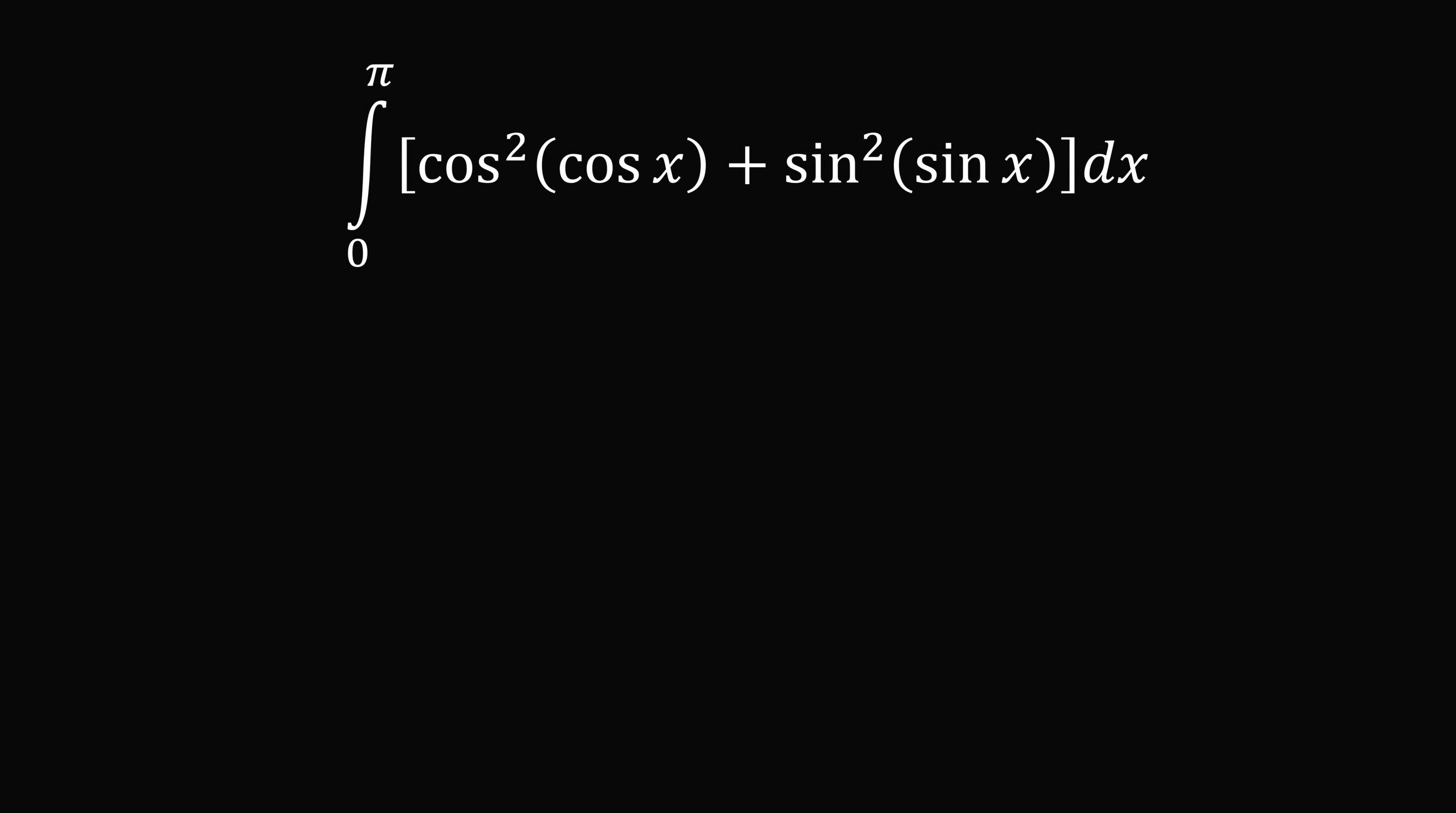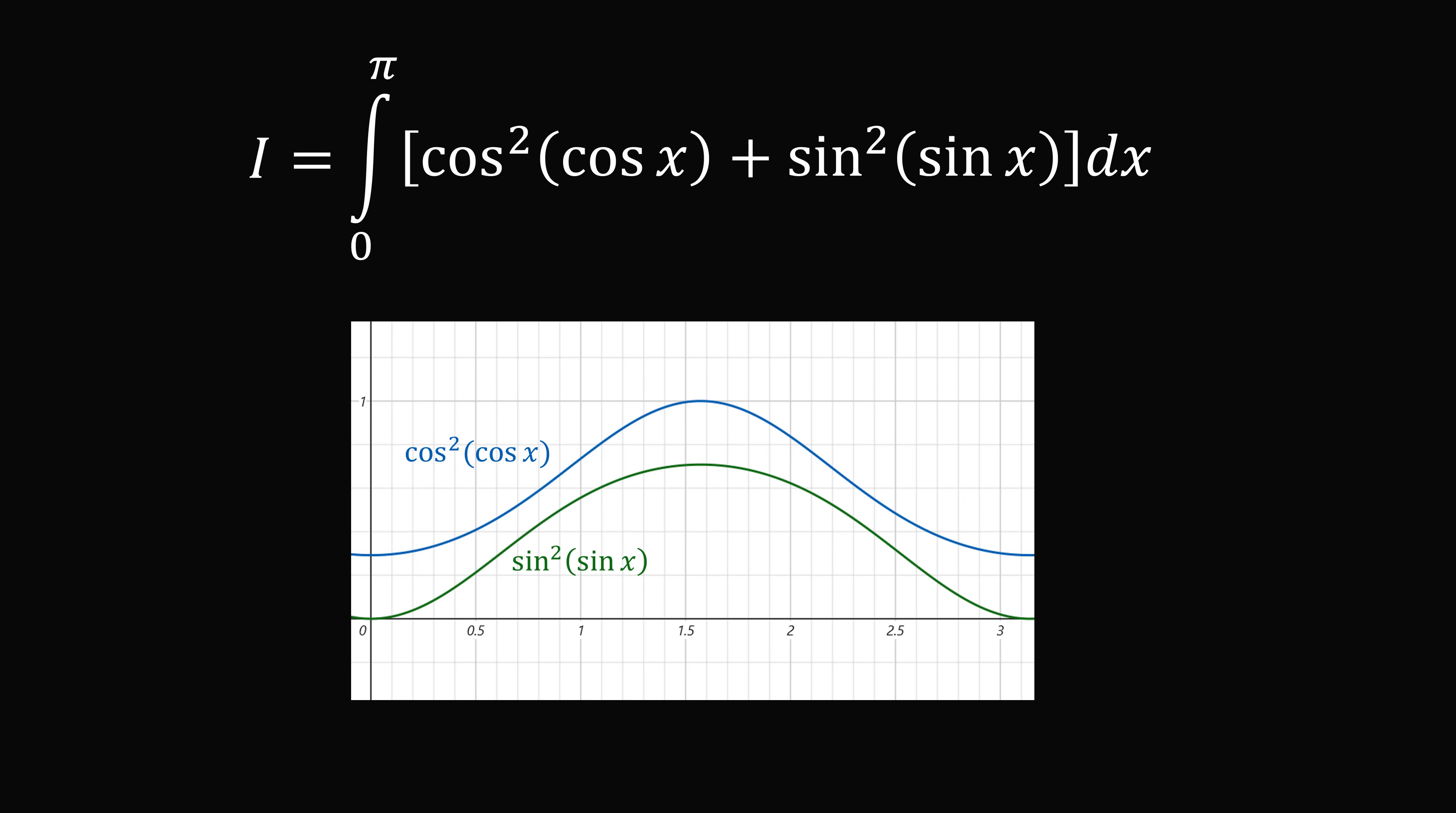To solve this problem, label the entire integral as being equal to i. Now let's look at the graphs from zero to pi. You'll notice that each graph is symmetrical about the line x is equal to pi over two right in the center.